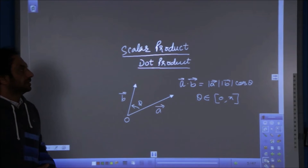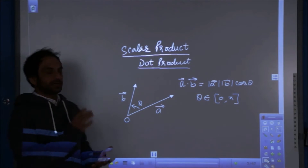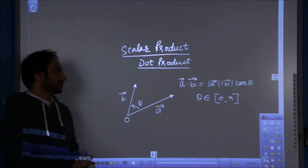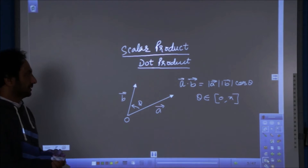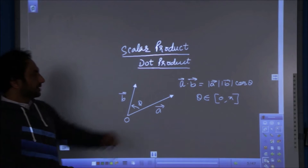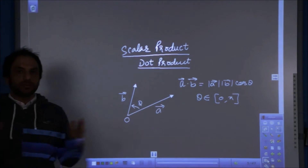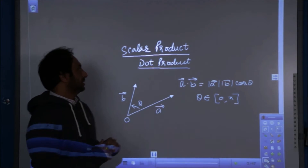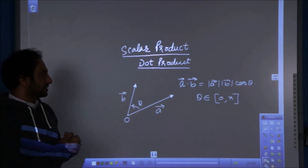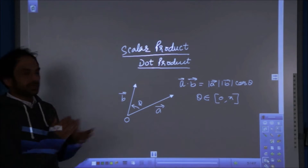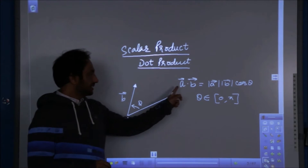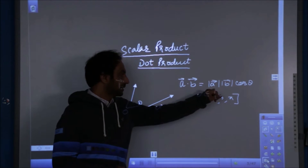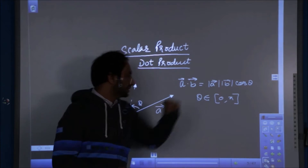Scalar product. The scalar product of two vectors is also known as the dot product of two vectors. The name dot product is given because of the symbol we use between them. So, A dot B — the scalar product or dot product of two vectors — is equal to mod A mod B cos theta.